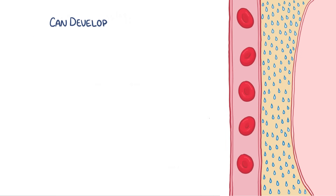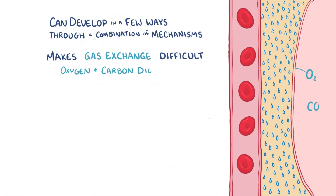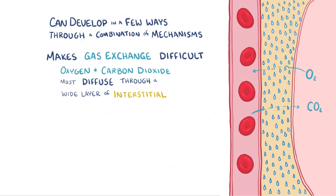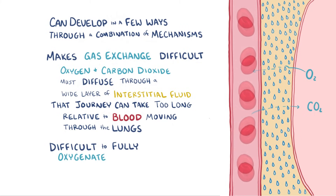Pulmonary edema can develop in a few ways, and often develops through a combination of mechanisms. Pulmonary edema makes gas exchange difficult because oxygen and carbon dioxide have to diffuse through a wide layer of interstitial fluid to get from the alveoli to the pulmonary capillary and vice versa. That journey can take too long relative to how quickly blood moves through the lungs, and that makes it hard to fully oxygenate the blood.